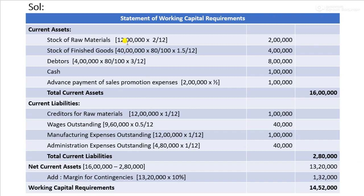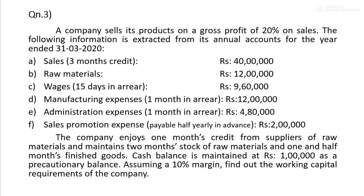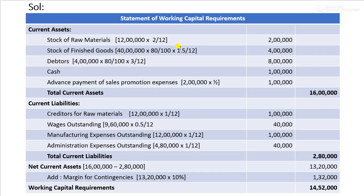Stock of raw materials is 12 lakhs per year. With two months stock, the calculation is 2 by 12, giving 2 lakhs.